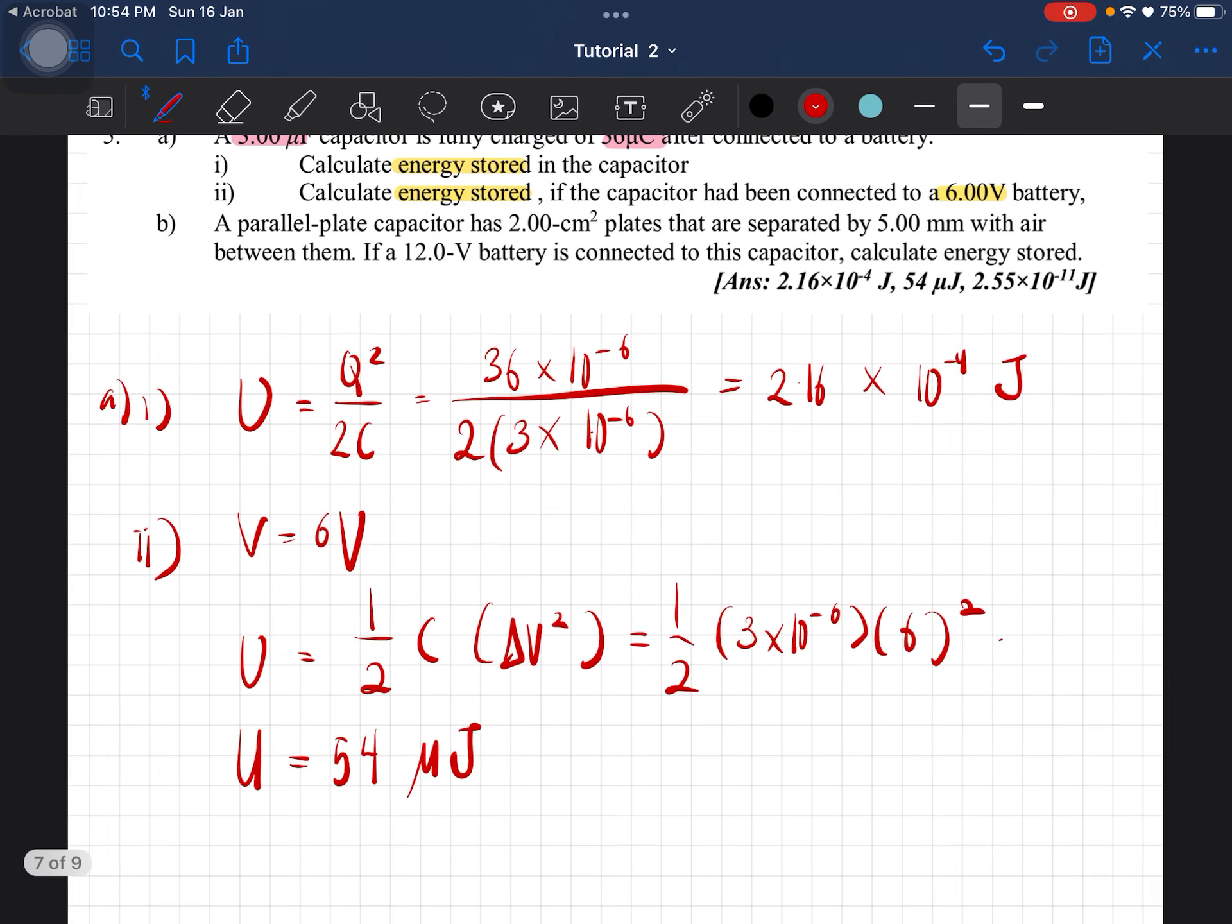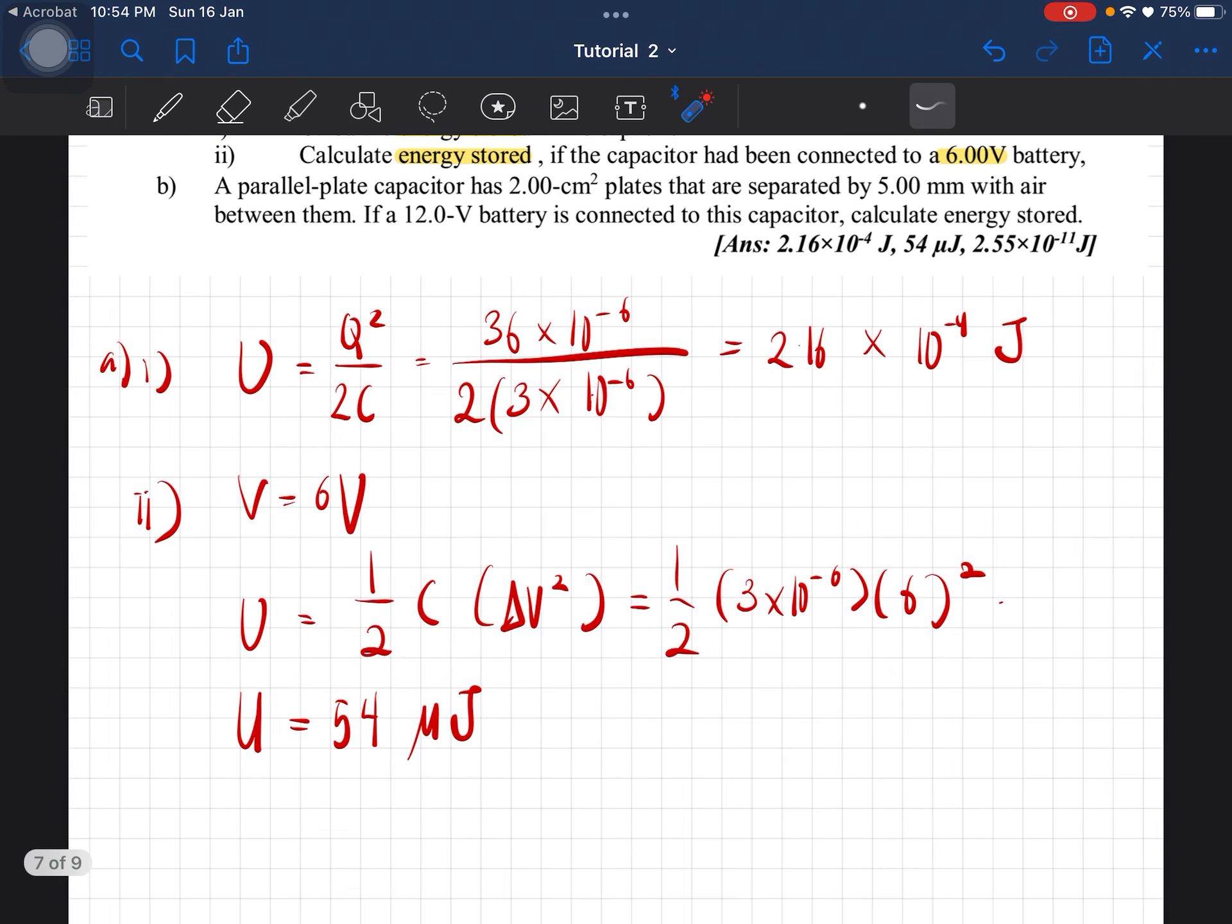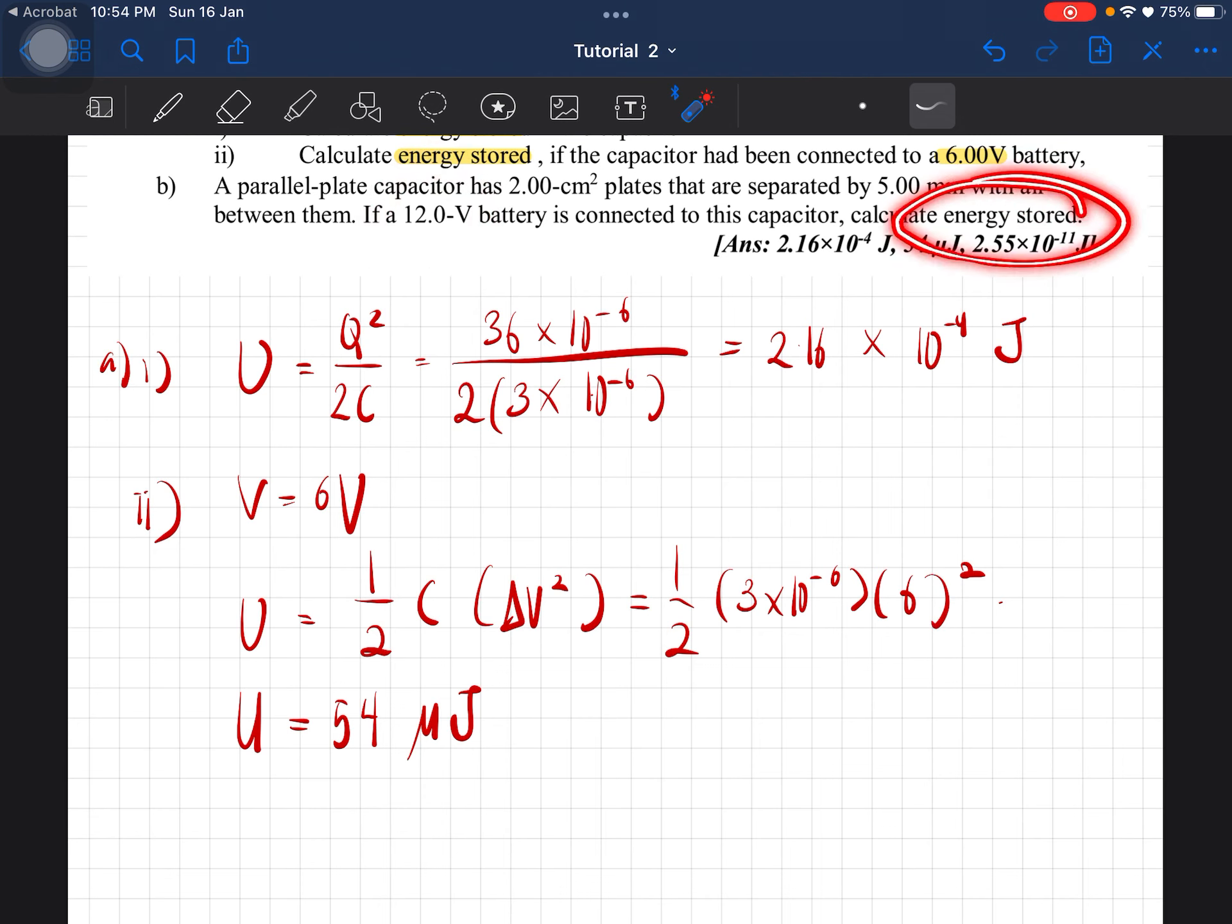Question B: a parallel plate capacitor has 2 cm squared plates that are separated by 5 mm with air between them. If a 12 volt battery is connected, calculate the energy stored.